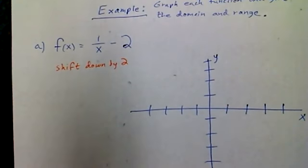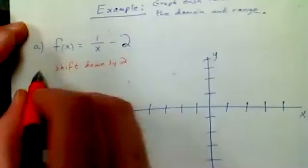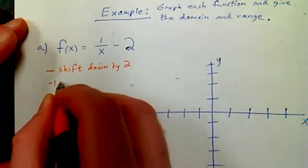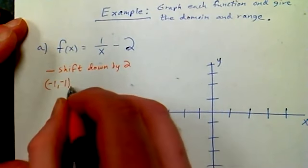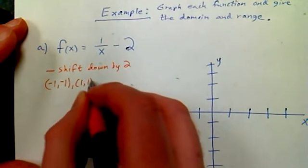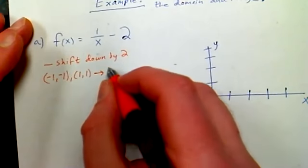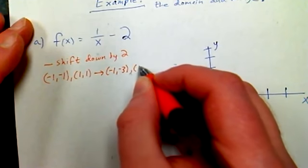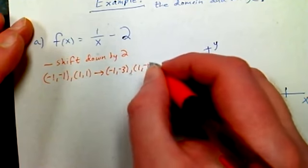I know that this minus 2 tells me that I have to shift down by 2. Remember I'm referring to our transformations right now. If I do that, remember I normally have negative 1 comma negative 1 and 1 comma 1 on the graph. I'm talking about these two points here.